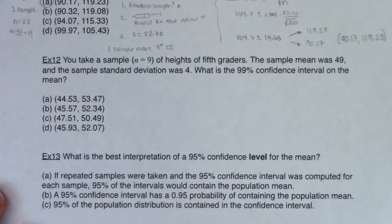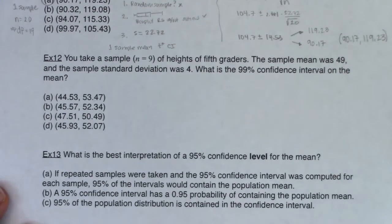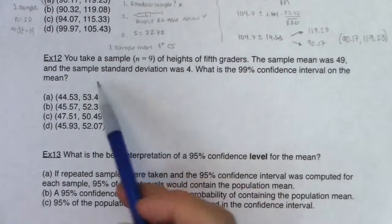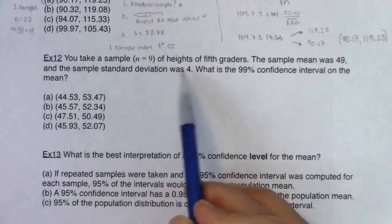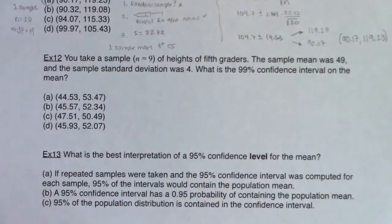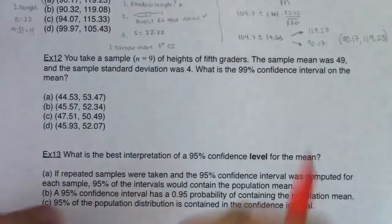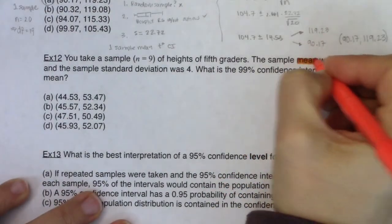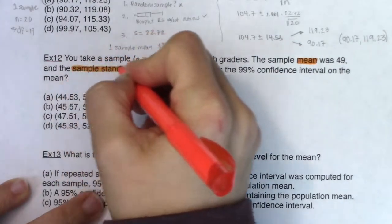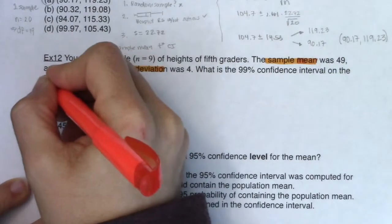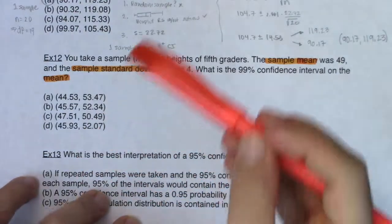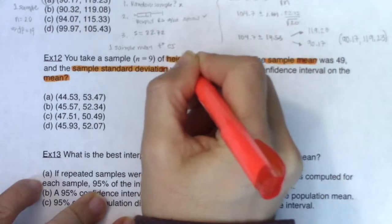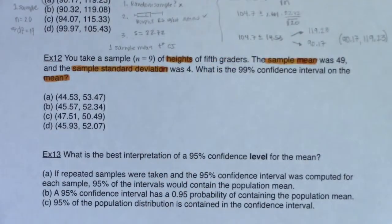All right, let's try example 12. It says: you take a sample of nine heights of fifth graders. The sample mean was 49 and the sample standard deviation was 4. What is the 99% confidence interval of the mean? I can see the word mean all over this problem. Another buzzword: we're going to have sample standard deviation, and sample mean. And another reason I would know it was a mean is none of these answers are between 0 and 1, so they can't be proportions. Heights is a numerical variable, and whenever you have a numerical variable you're looking at averages. So I know I'm in mean land.